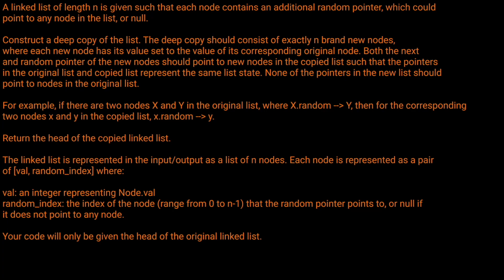For example, if there are two nodes x and y in the original list, where x.random points to y, then for the corresponding two nodes x and y in the copied list, x.random should be y. Return the head of the copied linked list. The linked list is represented in the input/output as a list of n nodes, each represented as a pair of value and random index, where value is an integer representing node.val, and random index is an index ranging from 0 to n minus 1 that the random pointer points to, or null. Our code will only be given the original head of the linked list, and we're expected to return the head of the cloned linked list.